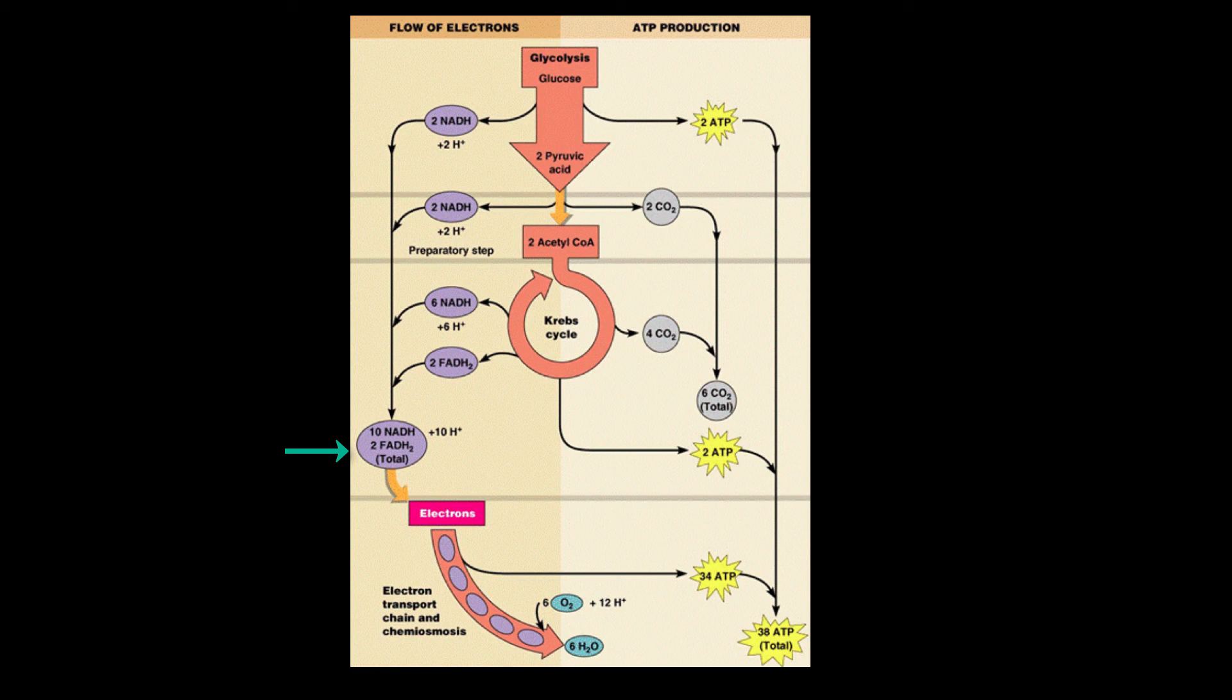For each NADH that feeds in, we're going to produce three ATP. For each FADH2 that feeds in, we're going to produce two ATP.